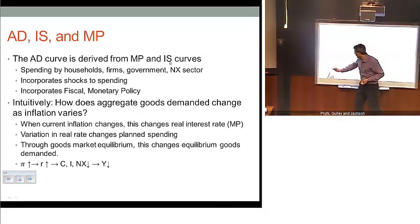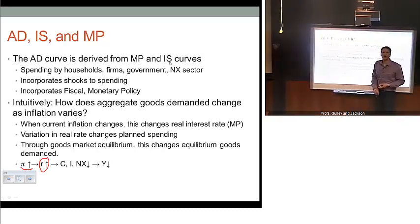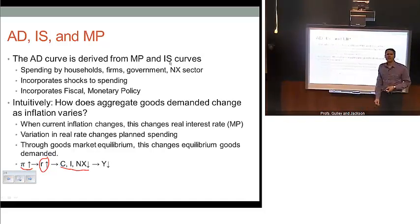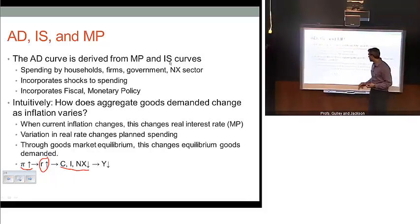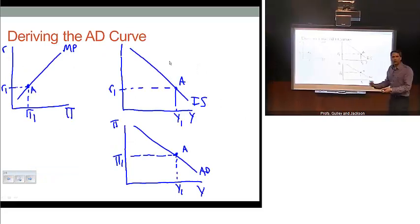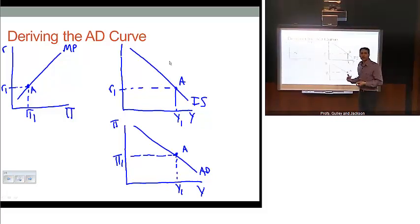That's the intuitive mechanism. When inflation increases, the Fed automatically responds by increasing its policy rate and the real interest rate. That impacts households, firms, and net exports' planned spending, which translates through to changes in the aggregate amount of output demanded. Let me walk you through a visual of how we can derive this relationship and how all these pieces fit together.